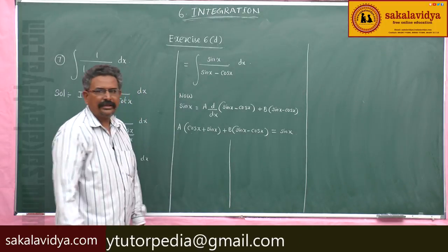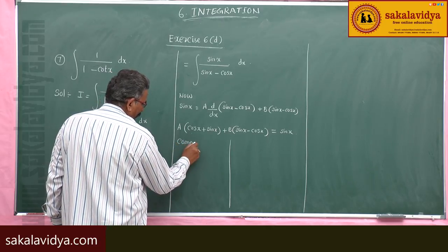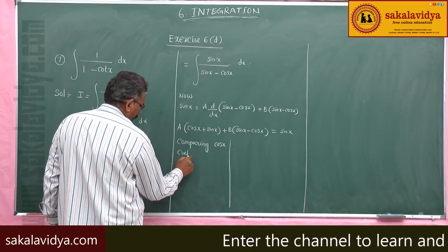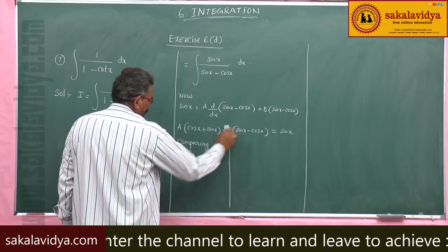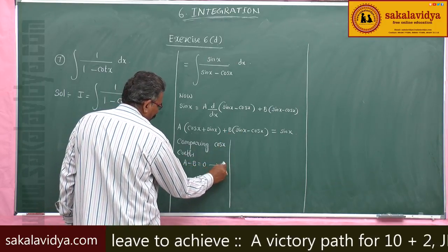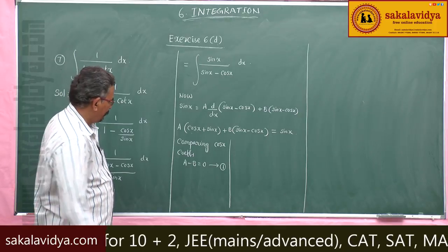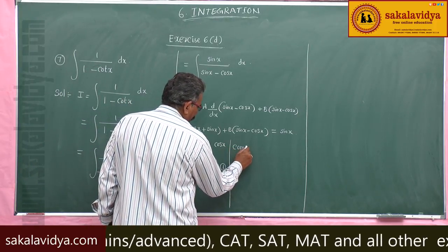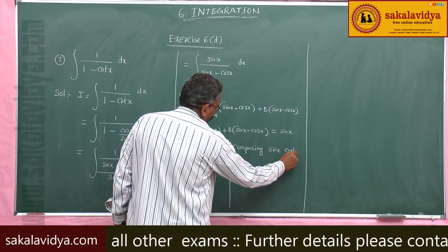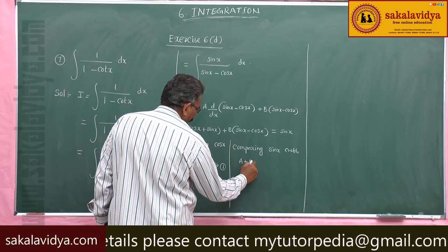We compare cos x terms and sin x terms. Comparing cos x coefficients: A - B = 0, equation 1, because the cos x term is absent on the right-hand side. Comparing sin x coefficients: A + B = 1, equation 2.